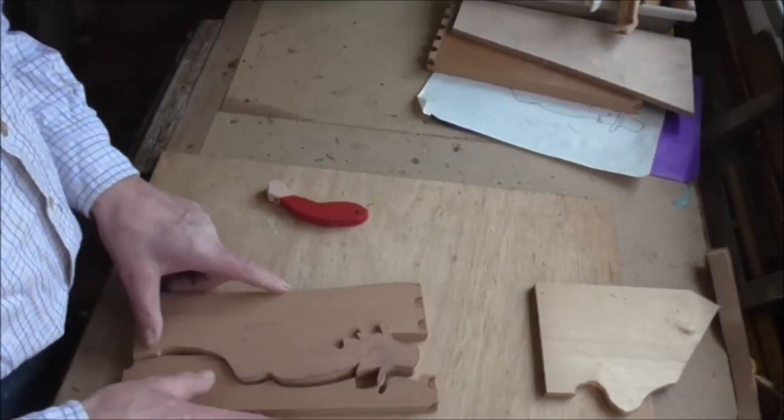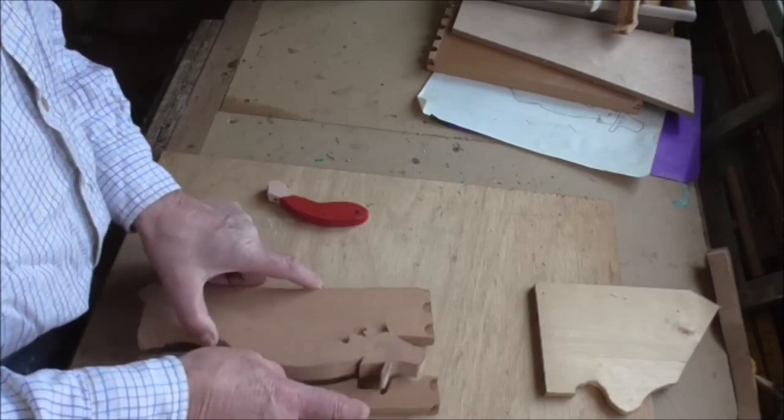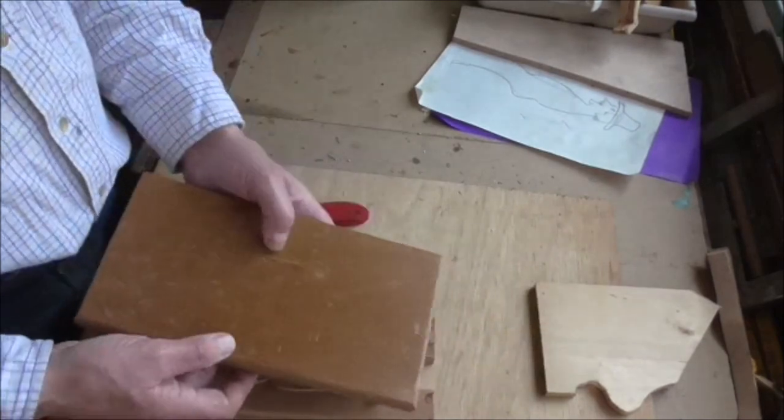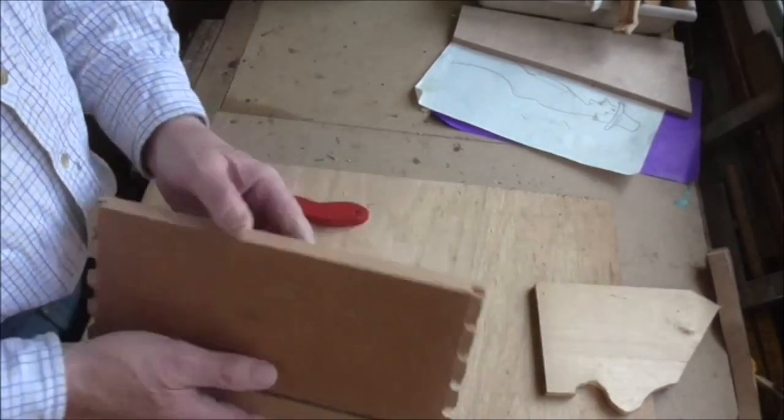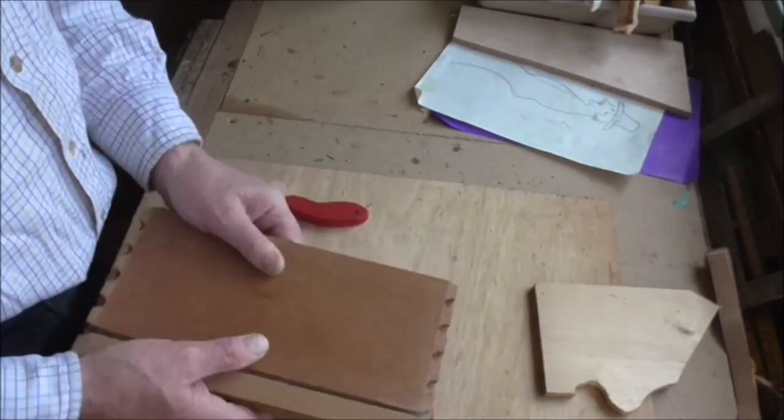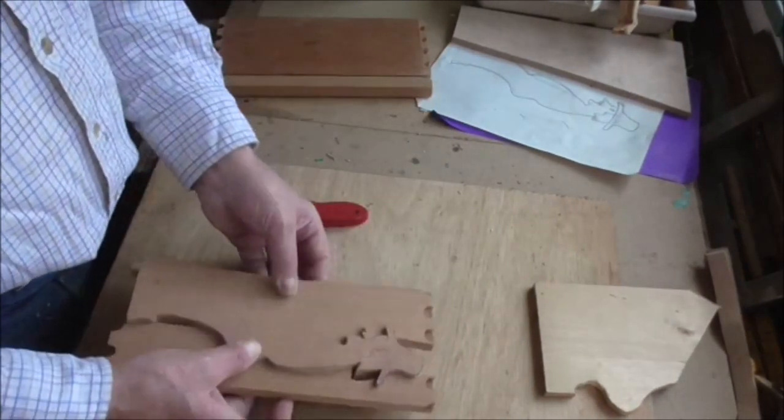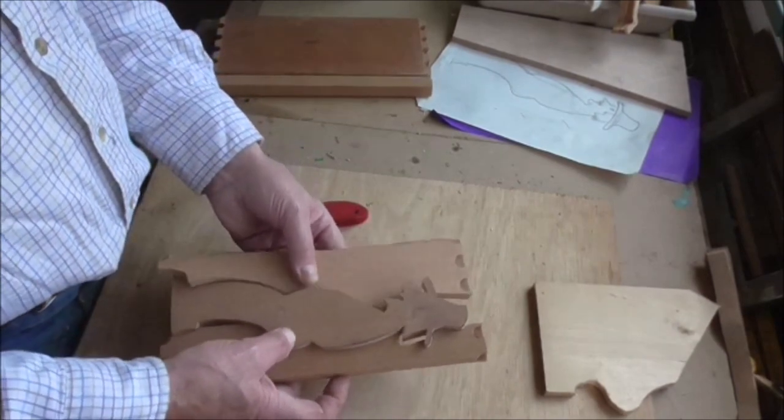This was a piece of a drawer out of an old wardrobe. I don't know what wood it is - it looks sort of like beech but I don't think it is. All I've done, I've just planed it down, made it a bit thinner.